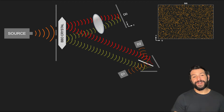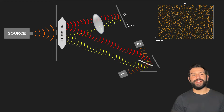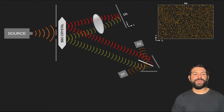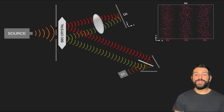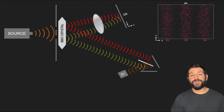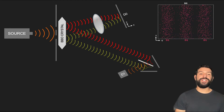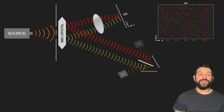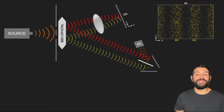However, the data does reveal something extremely interesting. If we selectively show on the screen only the particles correlated with the photons detected on D1, we do see what seems to be some sort of interference. Similarly, the screen photons associated with detections at D2 form a complementary set of bands.